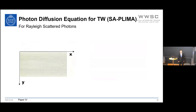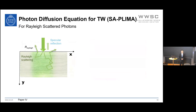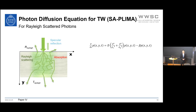Focusing on Rayleigh-scattered photons inside the material: when light hits the sample, specular reflection occurs due to refractive index mismatch, and the remaining photons undergo Rayleigh scattering—either backward (Rayleigh scattered reflectance) or forward (Rayleigh scattered transmittance)—with absorption also taking place. Since Rayleigh scattering is isotropic, a 2D diffusion equation is used to describe photon behavior in transparent wood.